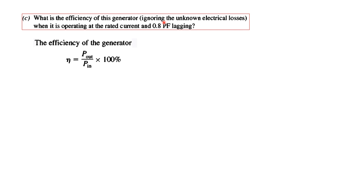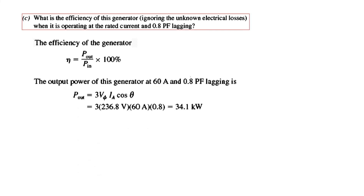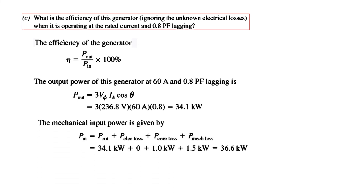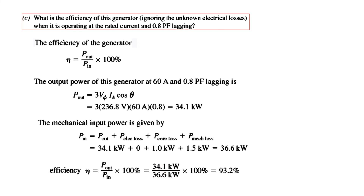Part C: Find the efficiency at 0.8 power factor lagging, ignoring unknown losses. Efficiency = P-out / P-in. P-out = 3 × V-phase × Ia × cos θ = 3 × 236.8 × 60 × 0.8 = 34.1 kW. P-in = P-out plus all losses; with the given friction/windage losses included, P-in = 36.6 kW. Efficiency = 34.1 / 36.6 = 93.2%.